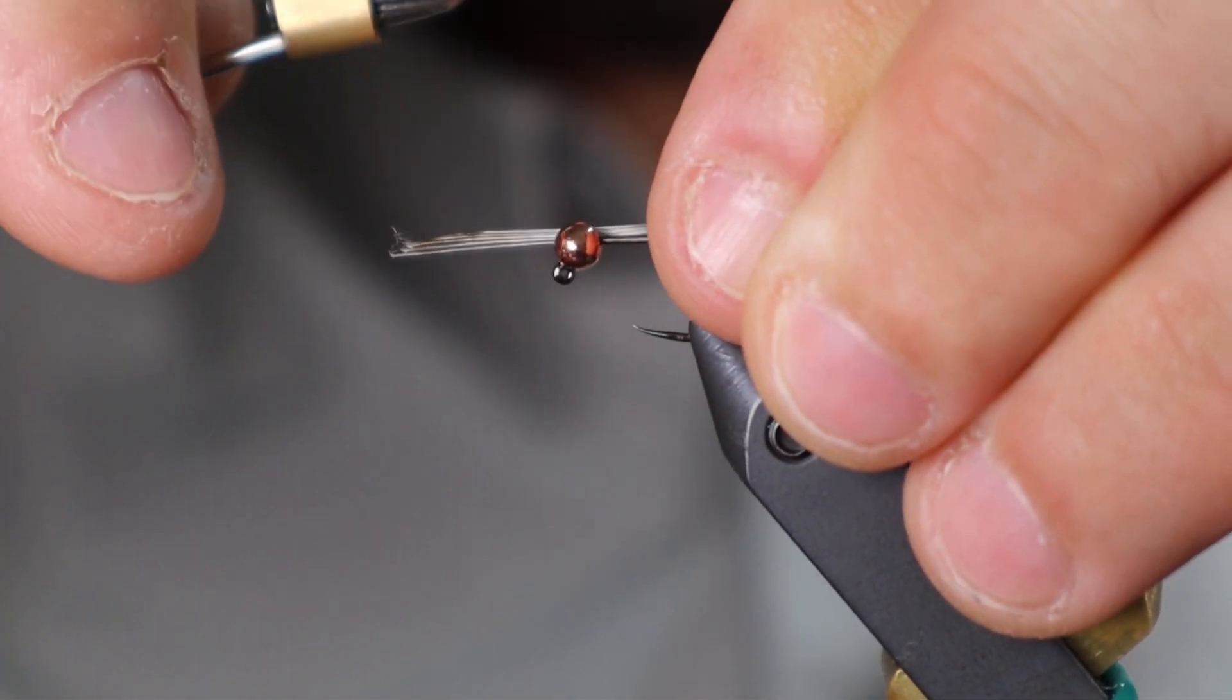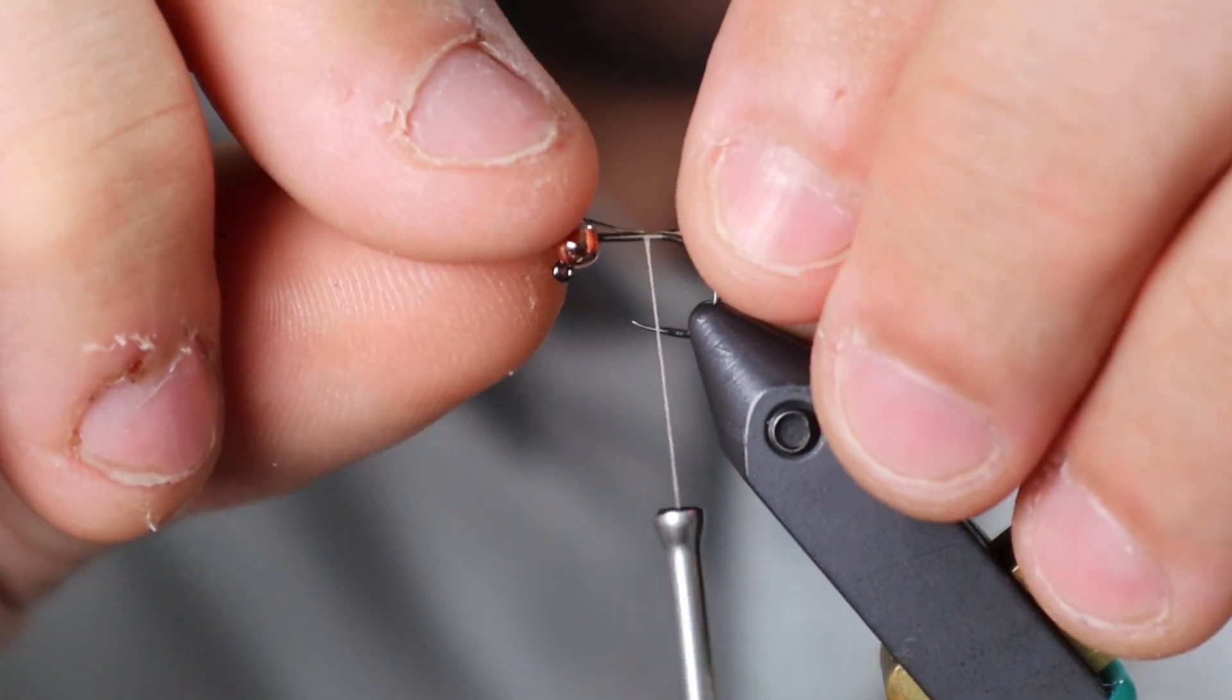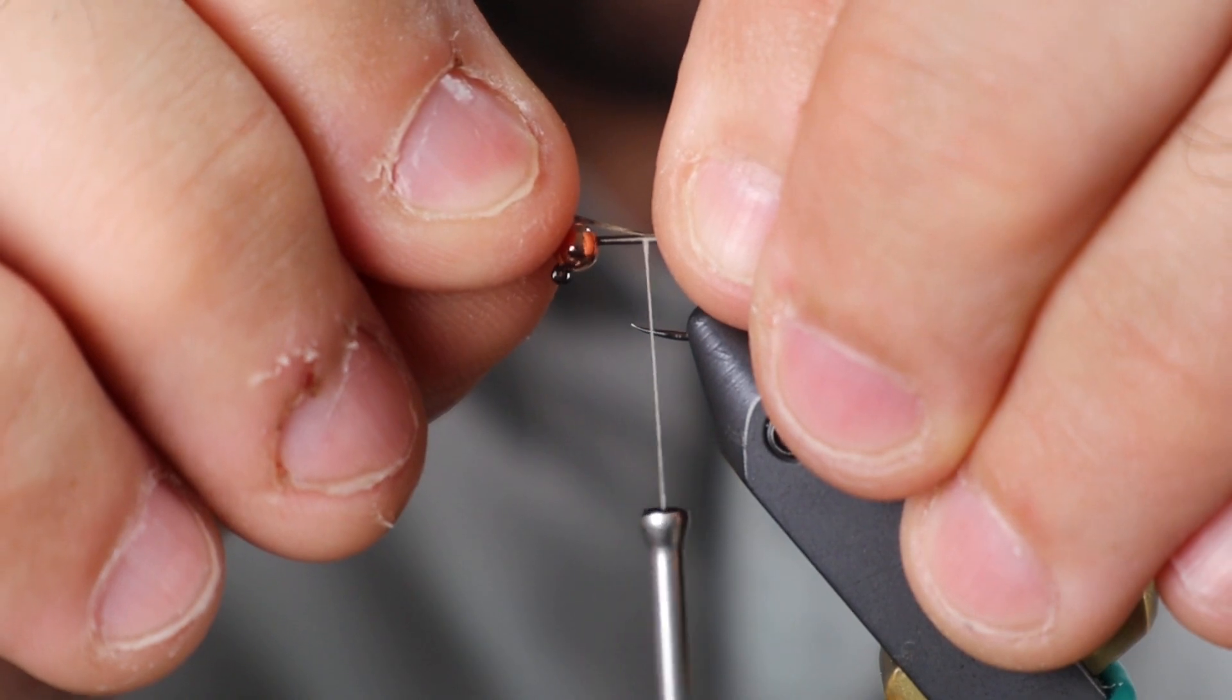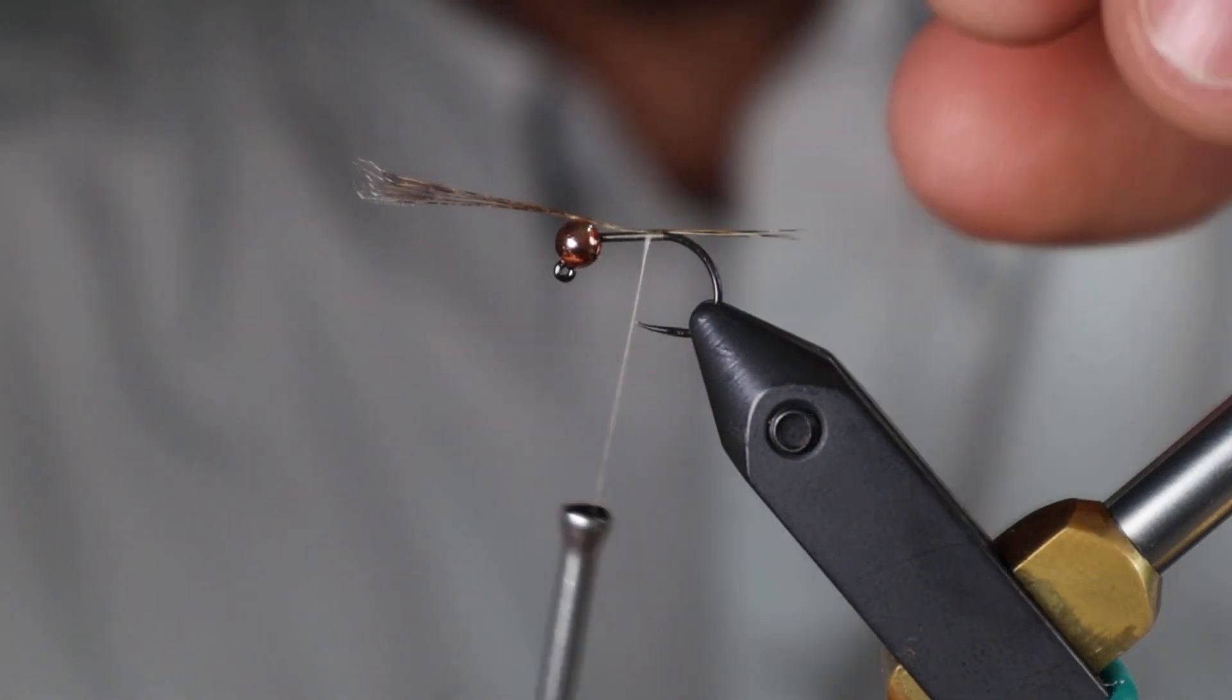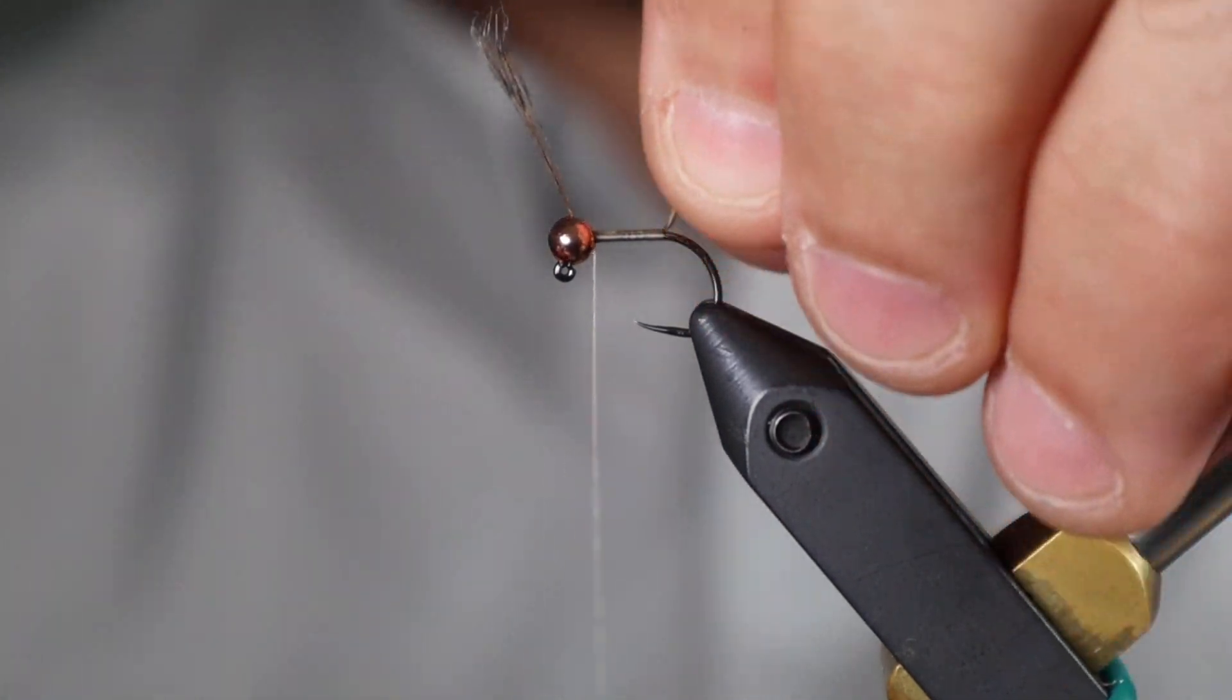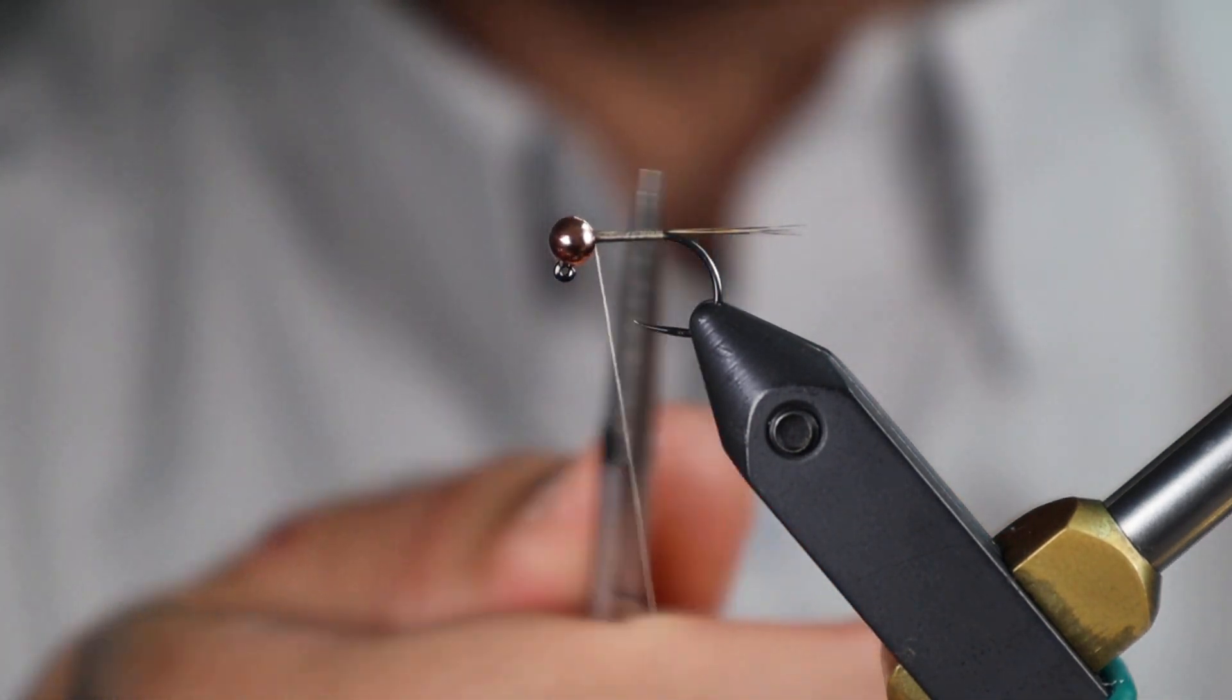For length, I like to go about the body. I don't like a super long tail. Do a pinch wrap, try to keep it right on top—a couple of loose wraps. Let's have a look. That's definitely too long for my liking, so I'm just gonna grab it, slide it forward a little bit. Again, a little bit too long. That's better. Once it's where I want it, keep it on top. Take your thread all the way back up to the front of the hook, back of the bead. By tying the tail fibers in as the full length of the body, you get a much smoother body—you don't have weird lumps, bumps, and transitions.